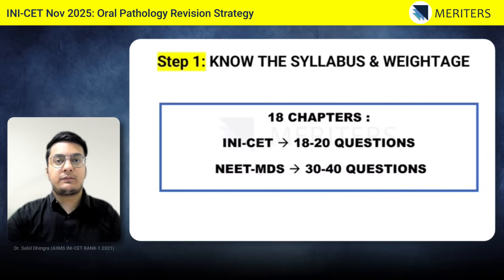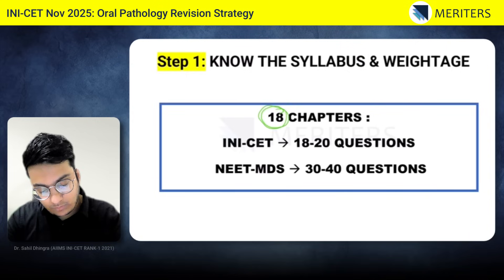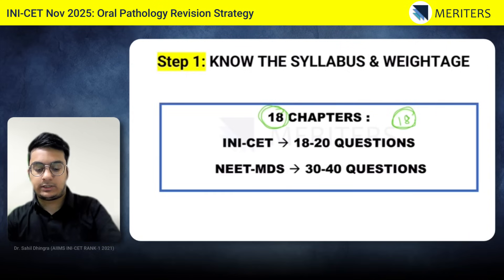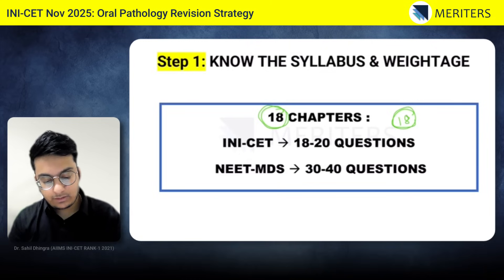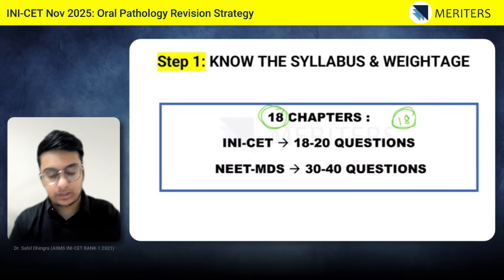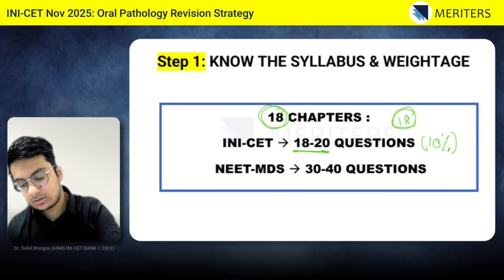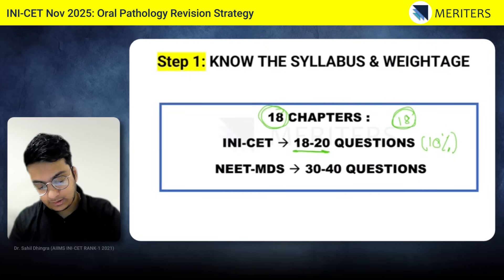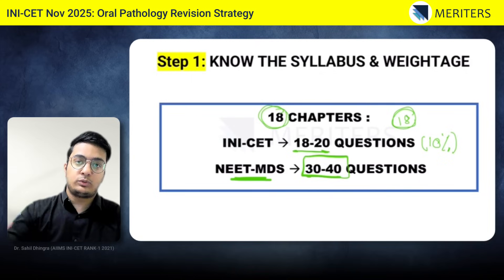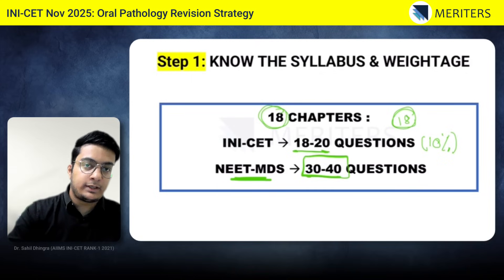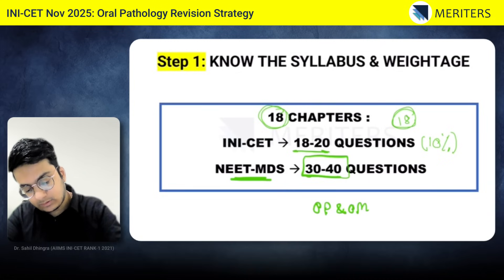The first step is to know the syllabus and the weightage for oral pathology. There are a total of 18 chapters in your Meritors app question bank for oral pathology and medicine. The weightage for oral pathology in your INICT is around 18 to 20 questions, which is almost 10% of your total 200 questions. And even in the NEET MDS, it has a very high weightage — almost 30 to 40 questions are asked from a combination of oral pathology and oral medicine.